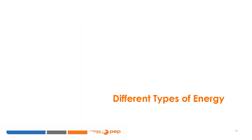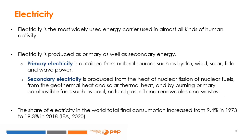In this subsection we describe different energies: electricity, oil, natural gas, solid fossil fuels (coal), renewable and waste. Electricity is probably the most widely used energy carrier, used in almost all kinds of human activities ranging from industrial production, household use, agricultural production and commercial use, for running machines, lighting and heating. Electricity is produced as both primary and secondary energy. Primary electricity is obtained from natural sources such as hydro, wind, solar, tide and wave power. Secondary electricity is produced from the heat of nuclear fission, from geothermal and solar thermal heat, and by burning primary combustible fuels such as coal, natural gas, oil, renewables and waste. After production, it is distributed to final consumers through national or international transmission and distribution grids.